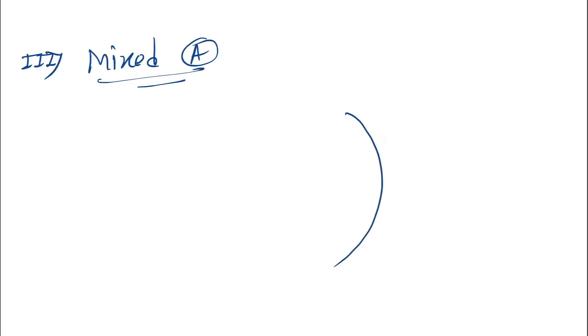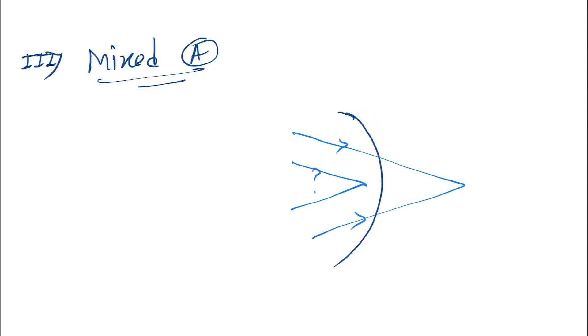The last type is mixed astigmatism. Here, one focal point (F1) is in front of the retina and the other (F2) is behind the retina.